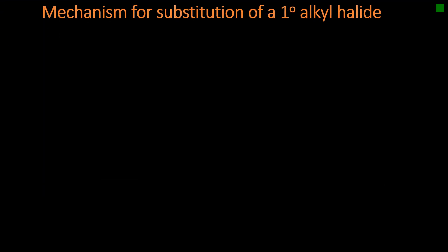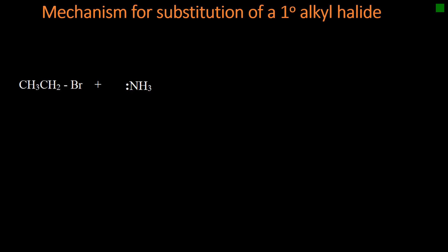Let us look at the mechanism for substitution of a primary alkyl chloride. We have two reagents: ammonia and bromoethane. Ammonia is a nucleophile and bromoethane is the substrate. We have a partial negative charge on bromine and a partial positive charge on carbon. The positive charge on carbon is attracting electrons from ammonia, and they form a dative covalent bond between nitrogen and carbon. The electrons of this bond then repel the electrons between carbon and bromine.